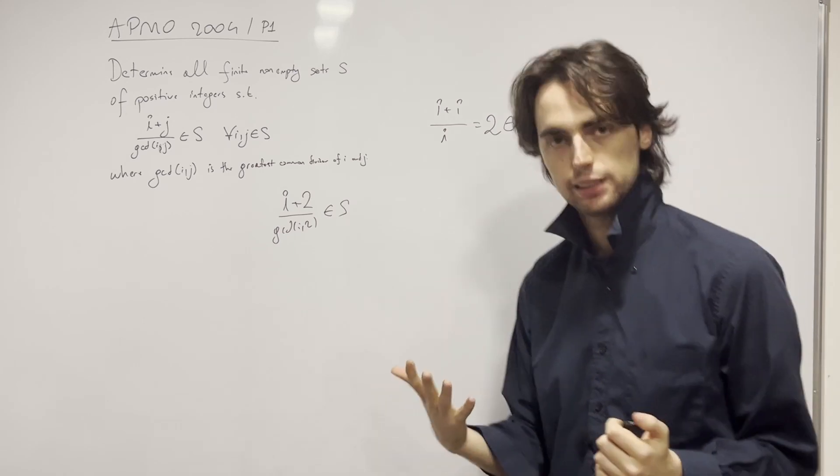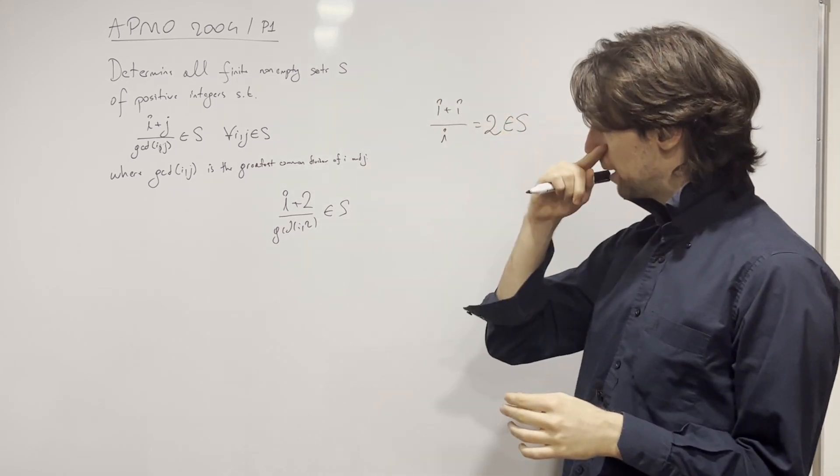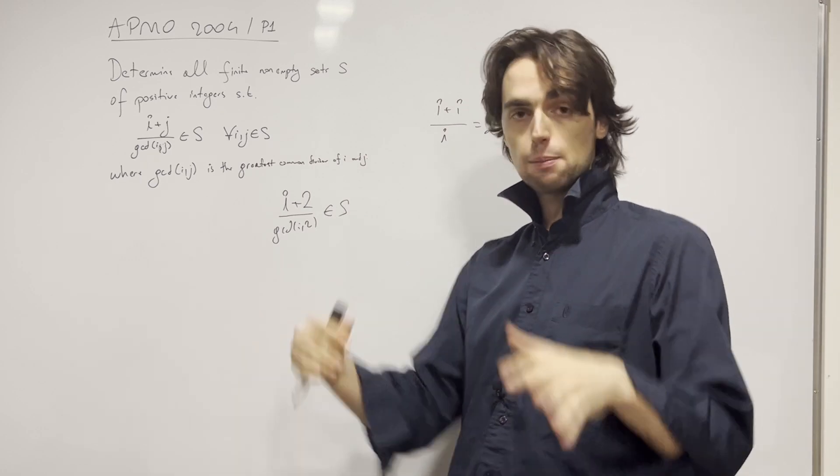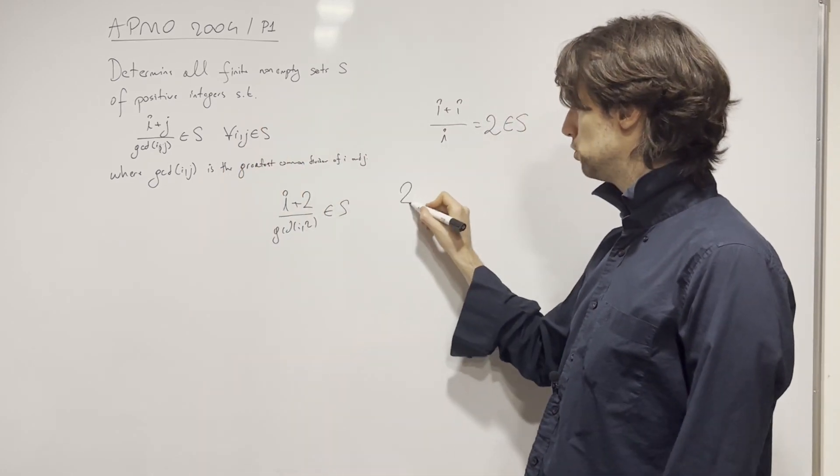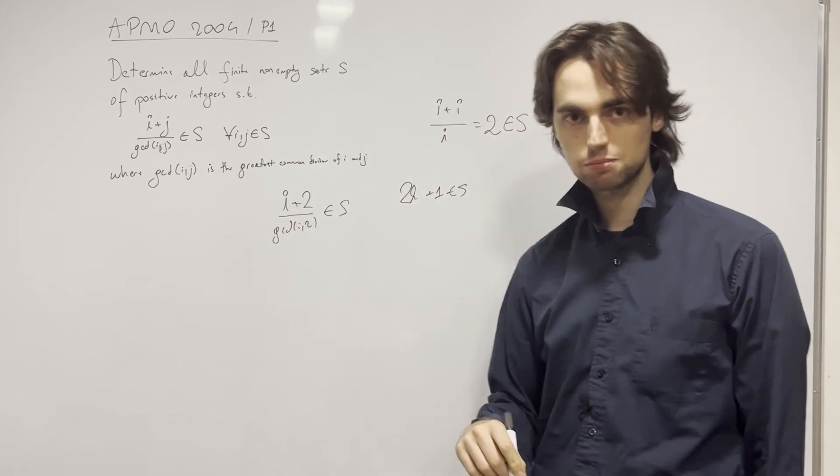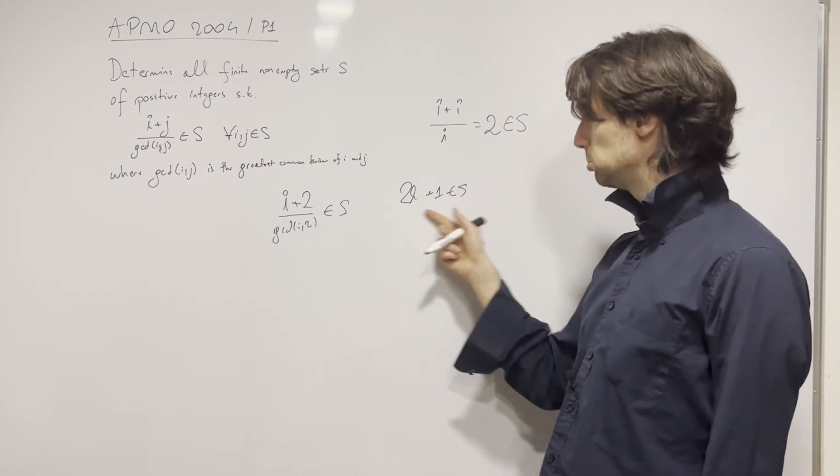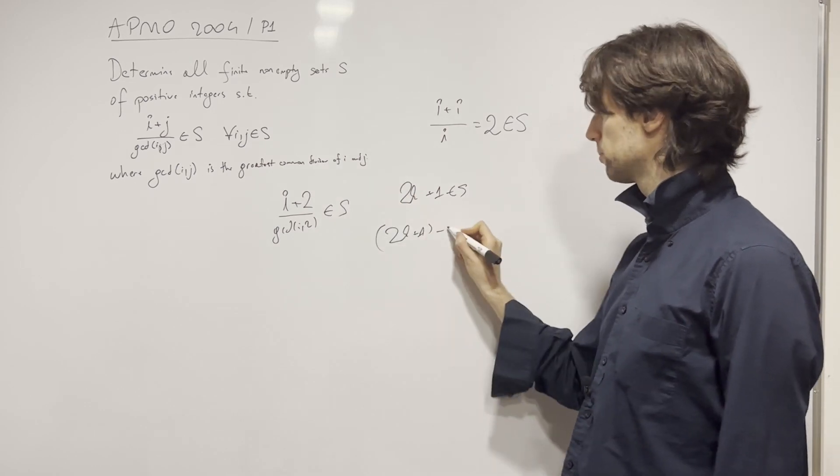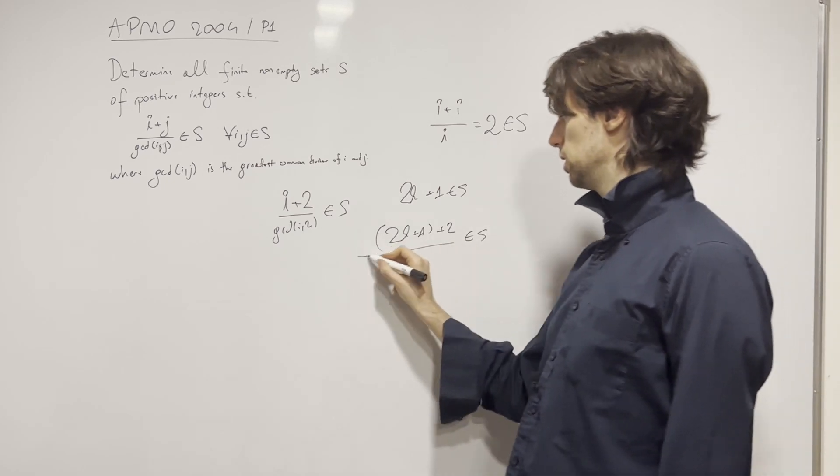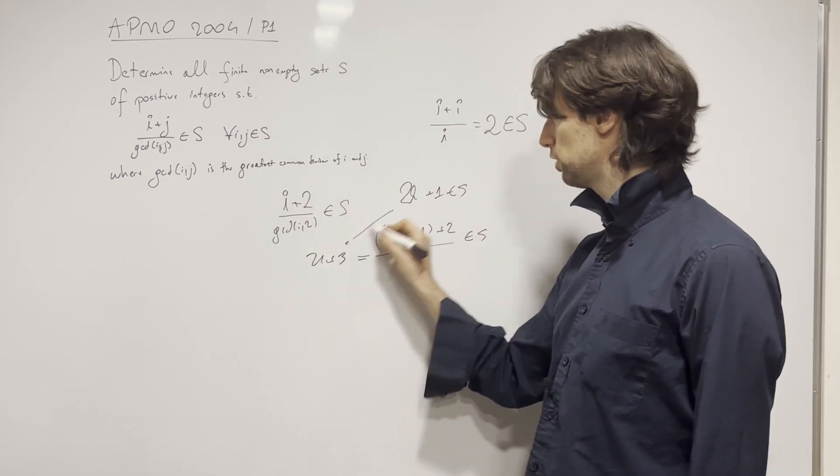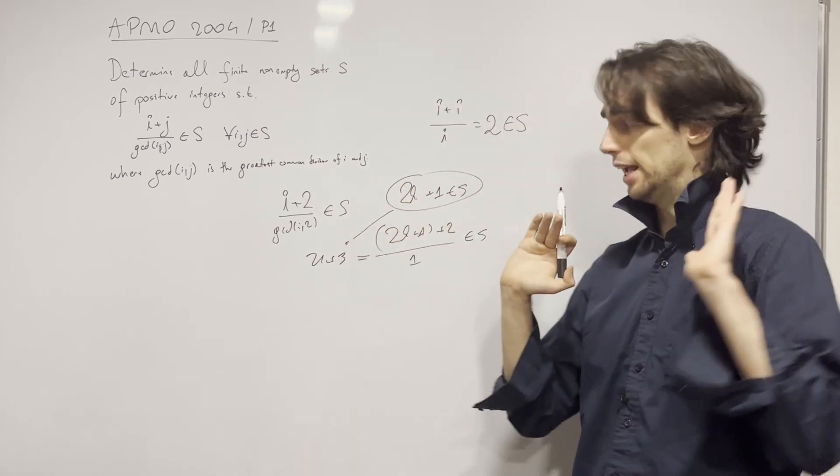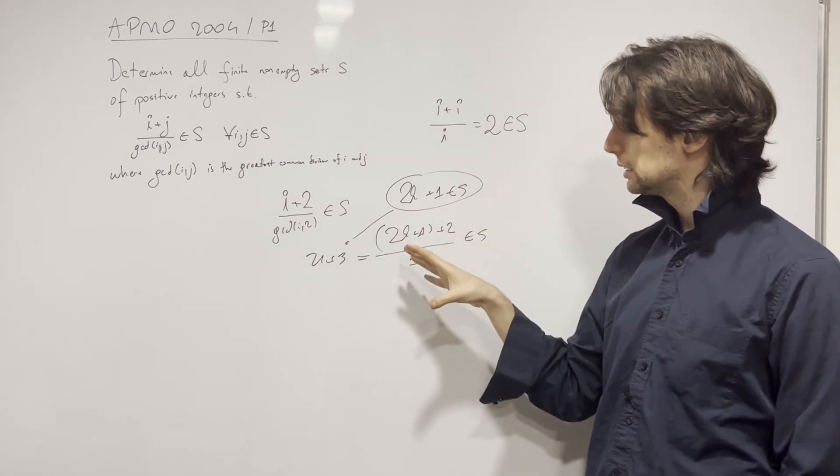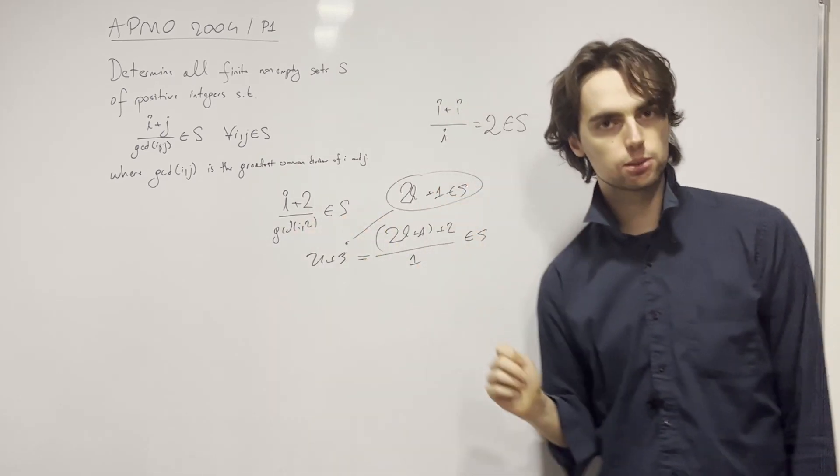Now, some of you may be wondering, okay, how do I write this down? And you can say, assume that there exists a finite S which has an odd integer. And let's take, because it's finite, we can take the biggest of those odd integers. And let that be 2k+1, that's an element in S. And then you say, okay, this tells me if 2k+1 is in S, then if I take 2k+1 and 2, then I have (2k+1+2)/1 is an element in S, so this is 2k+3, which is a contradiction that 2k+1 was the biggest one. That's a totally legit way to write this down. And it's quick and simple.